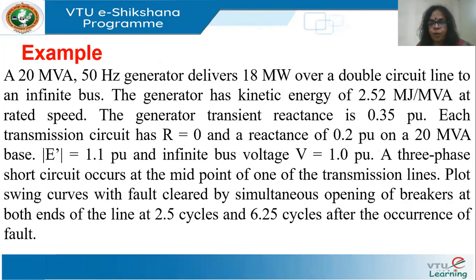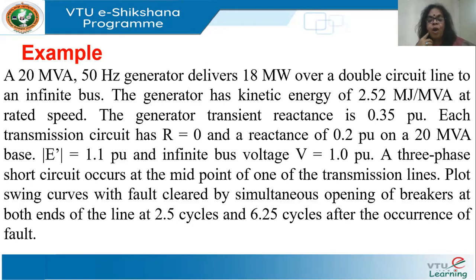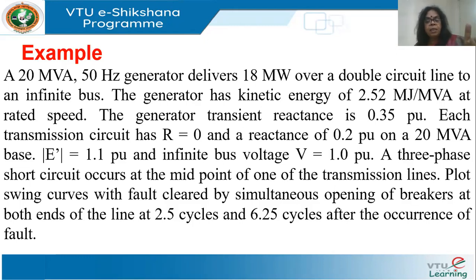Let's take up an example: a 20 MVA, 50 Hz generator delivering 18 MW over a double-circuit line, with H = 2.52, generator transient reactance of 0.35 per unit, resistance neglected. Each line has 0.2 per unit reactance, generator voltage 1.1 per unit, and infinite bus voltage 1 per unit. A three-phase short circuit occurs at the midpoint of one transmission line. Plot swing curves with the fault cleared by simultaneous breaker opening at 2.5 cycles and at 6.25 cycles.